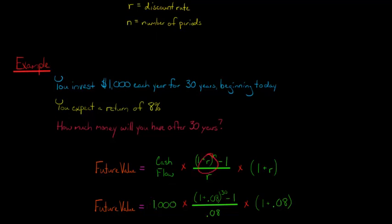And then our R, the discount rate, that's that 8%. But we're going to convert that to a decimal, so it would be 0.08. So we've got 1 plus 0.08 raised to the 30th power. Why the 30th power? Because there's 30 periods. So 1 plus 0.08 raised to the 30th power minus 1, and then we divide that by 0.08.